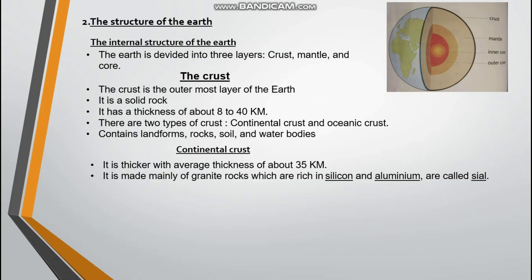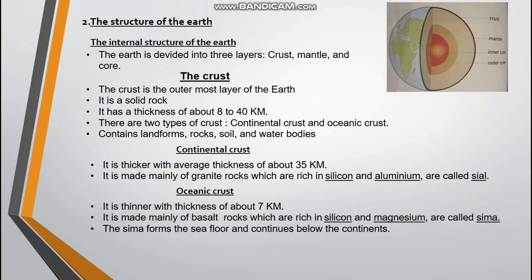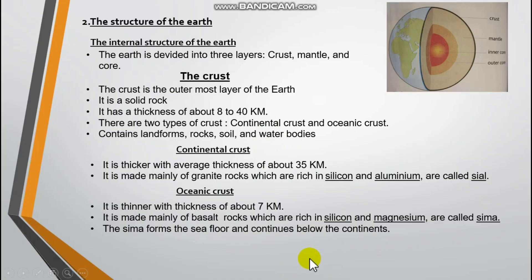Continental crust is thicker, with an average of about 35 kilometers. It is made mainly of granite rocks, which are rich in silicon and aluminum, and are called SIAL. Oceanic crust is thinner, with a thickness of about 7 kilometers. It is made mainly of basalt rocks, which are rich in silicon and magnesium, and are called SIMA. Sometimes they might not say continental crust or oceanic crust — they might just call it SIAL and SIMA. Just know they are talking about continental crust and oceanic crust.